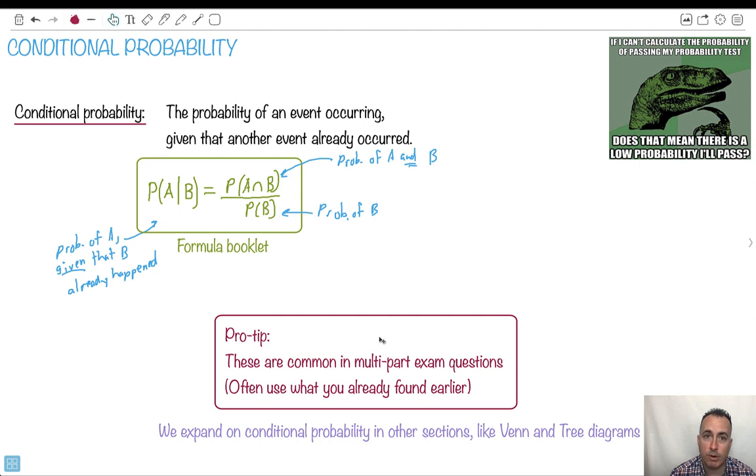So these are common in multi-part exam questions. So let's say you get a long question on, I don't know, paper one or two. But like, you know, at the end of your paper one or two, you get a long question with lots of parts. Very often, they're going to have a part where you have to do this. And the cool part is, often you have to use what you've already found. So very likely, they've already asked you to find something you needed up top or maybe on the bottom. So usually you've already done the work you needed to do. You just had to recognize it. So this is the key here. Let's do an example.